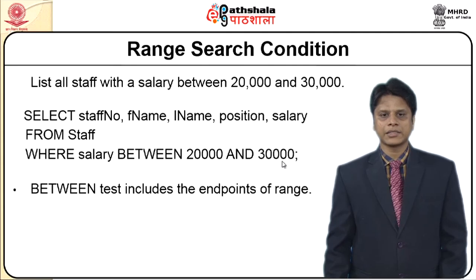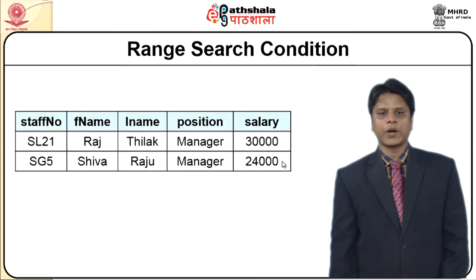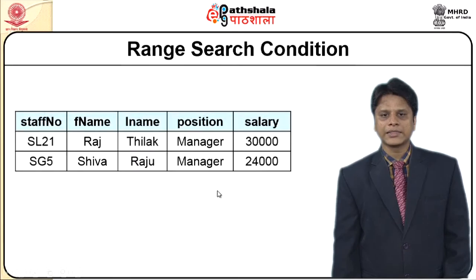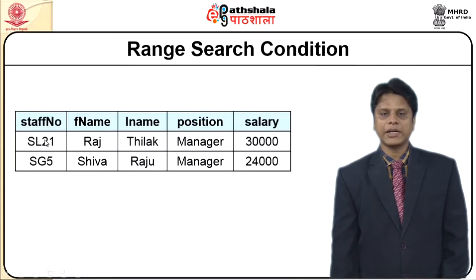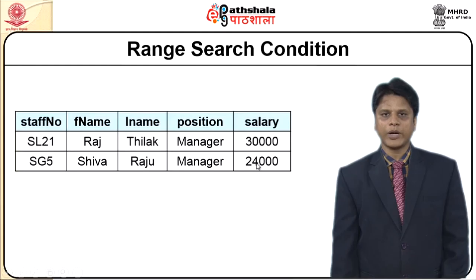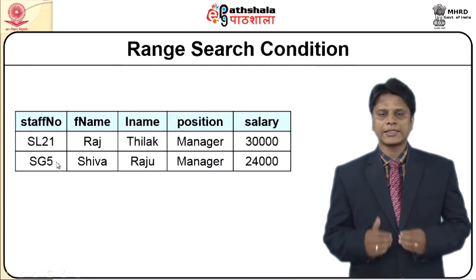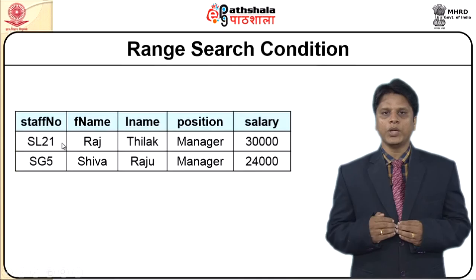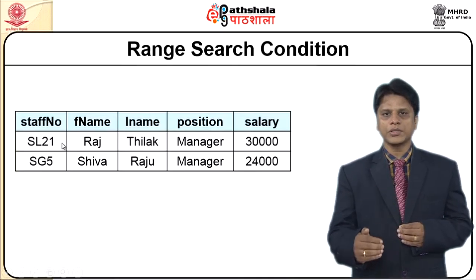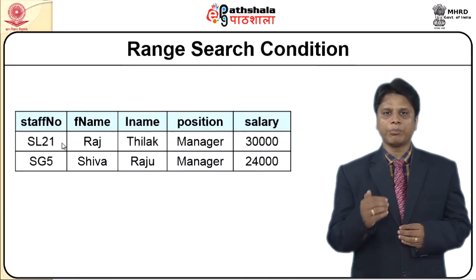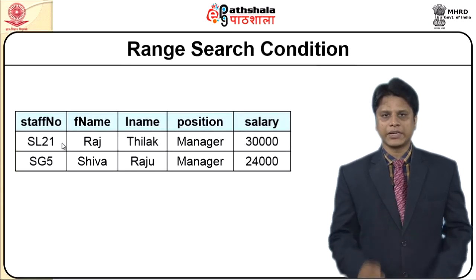In such cases, I can change the entire range. As part of my table, this is the exact output we would get — a person with staff number SL21 drawing 30,000 would be retrieved, and another person drawing a salary of 24,000 would also be retrieved. So our range stood between 20,000 and 30,000, and we got only two complete records based upon this condition.